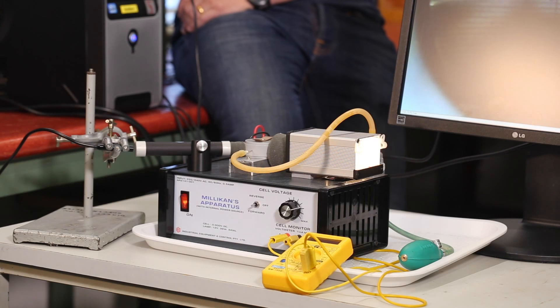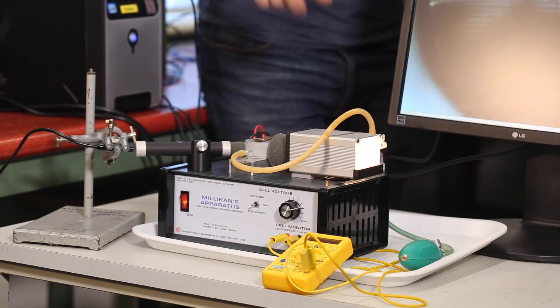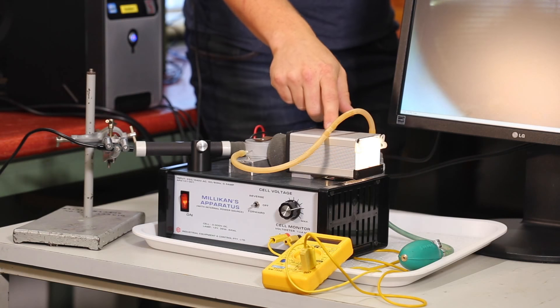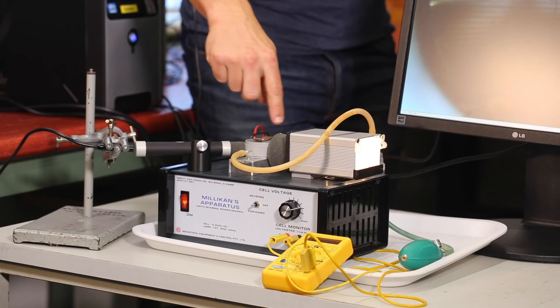So in terms of the equipment, I should hand over to Tom seeing that it's his equipment. This equipment is pretty recognizable to some students and teachers. It's different to the experiment that Millikan did, but it's a pretty accessible version of the experiment. I'll just point out some of the parts of it. This here is the light box, and that just shines a light into the chamber in here where all the action happens.